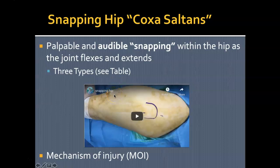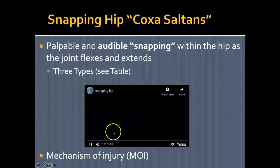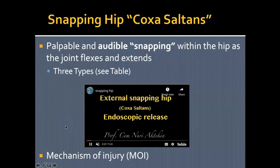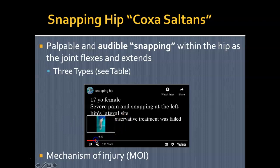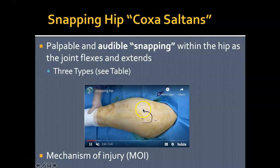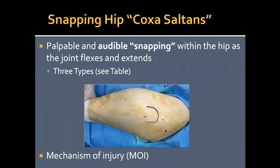The next pathology is snapping hip, also called coxa saltans. It is exactly what it sounds like — the hip snaps. Typically it's a palpable and audible snapping within the hip as the hip extends and flexes. There are three types. In a demonstration video, you can see the IT band slipping over — what appears to be the tensor fasciae latae or IT band snapping over the greater trochanter.